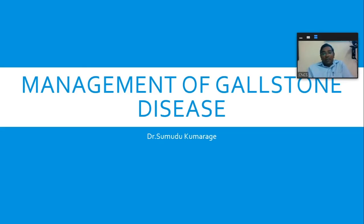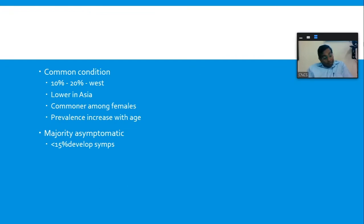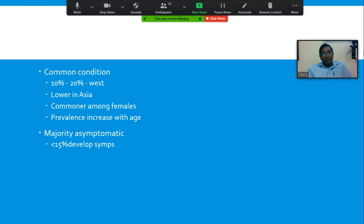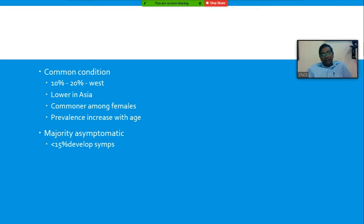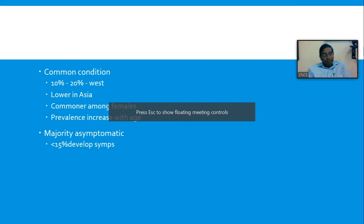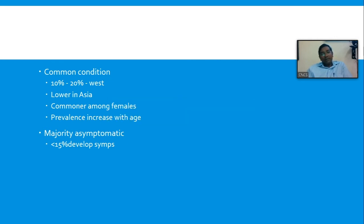Today we are going to talk on management of gallstone disease. This is a common disease — gallstones occur in about 10 to 20 percent of the population. We don't have real data about the incidence in our country, but in western countries it's around 10 to 20 percent. It is a little less in Asia. Gallstones are common among females, and the prevalence increases with advancing age — around age 60, about 30 percent of people are harboring gallstones.